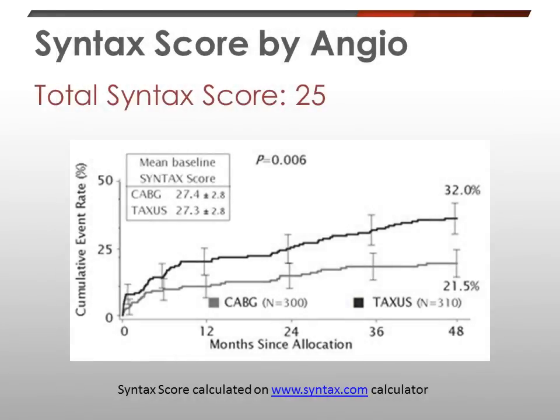The SYNTAX score by angiography is 25. The cumulative event rate at 2 years of follow-up with stenting would be 32% versus 22% in the CABG arm.